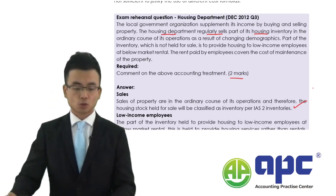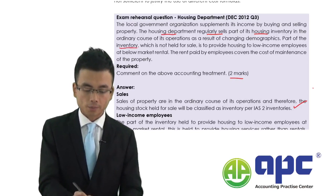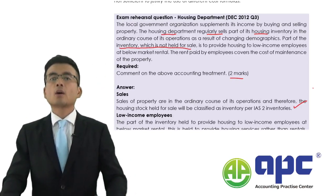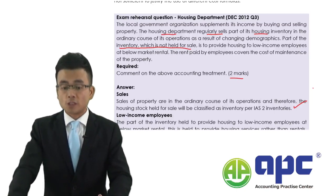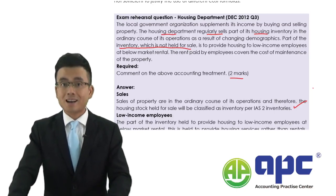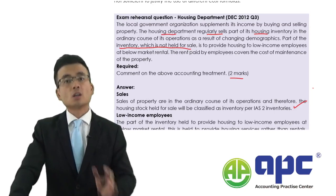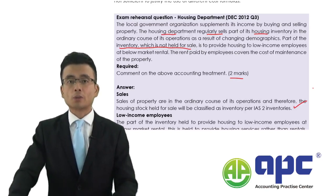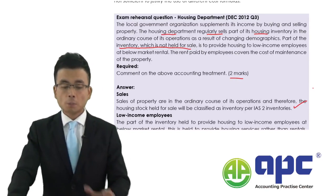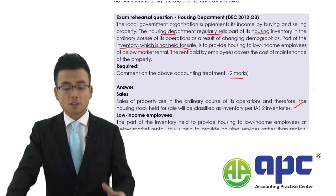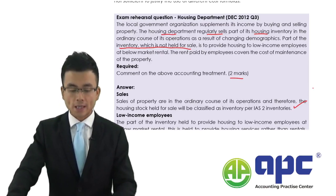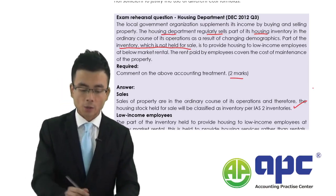Parts of the inventory which are not held for sale — if the inventory is not held for resale purposes, it is highly likely that it should be accounted for as PPE (property, plant and equipment) according to IAS No. 16. But here, part of the inventory is not held for sale but rather to provide housing to low-income employees at below-market rental.